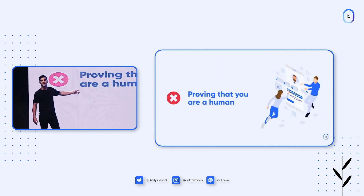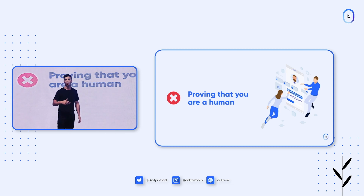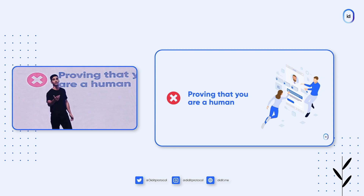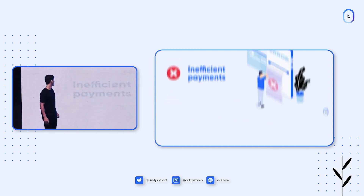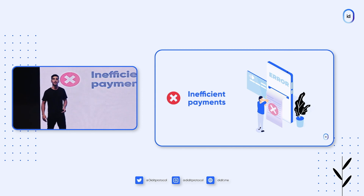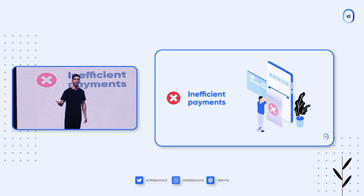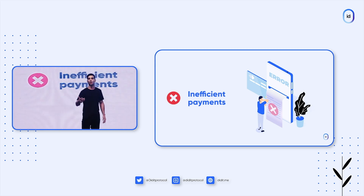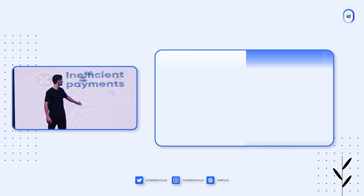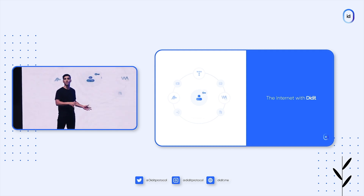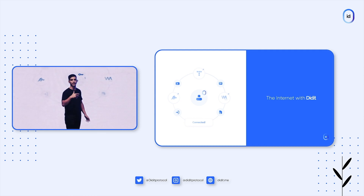There is also a big challenge to prove that you are a real human. You can see that every day with captchas, or on social media when you interact and see different fake accounts or bots, and it's very difficult to detect them. And lastly, we have inefficient payments. Since economic value is not native to the internet, there are high fees and low settlement speeds for economic transfers on the internet. So, as we see, there are a lot of challenges on the internet right now, mainly due to the identity layer problem.